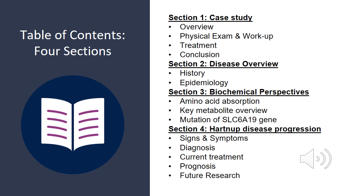Here's our table of contents slide giving you a brief overview of what our presentation is going to look like. Section one is our case study including an overview, physical exam and workup, treatment and conclusion. Section two is our disease overview section including a history and epidemiology of Hartnup disease. Section three is our biochemical perspective section, including amino acid absorption and its importance, key metabolite overviews including melatonin, serotonin, and niacin, and an overview of the mutation of the SLC6A19 gene and how that causes signs and symptoms of Hartnup disease.